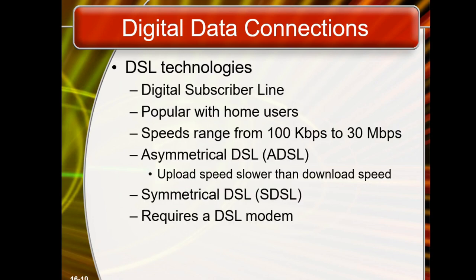DSL — Digital Subscriber Line — is the popular way for home users to connect. Speed ranges from 100 kbps to 30 Mbps. There is also Asymmetrical DSL (ADSL). To connect via DSL, a DSL modem is required, which is provided by PTCL.